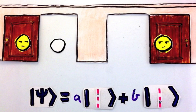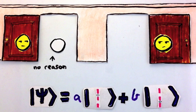And because that choice is truly random, there is no cause for it. There is no reason why this particle is measured at door 1 and not door 2.